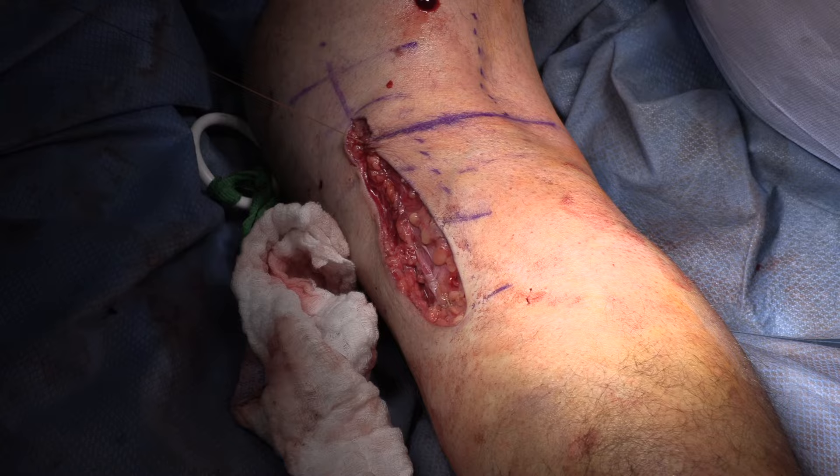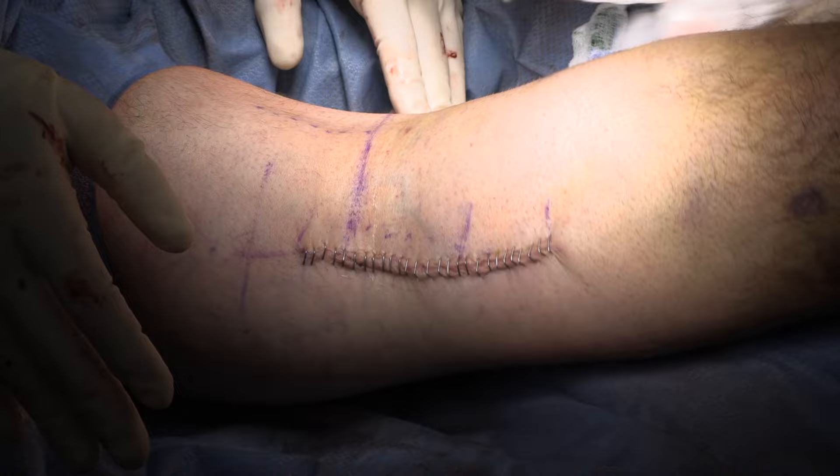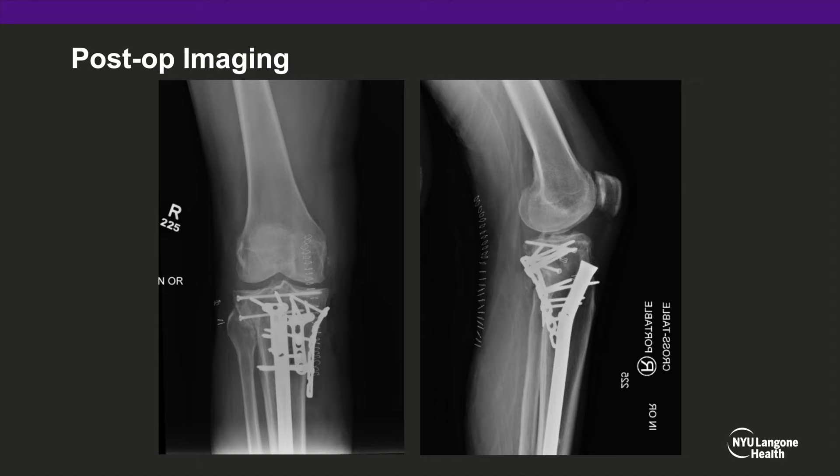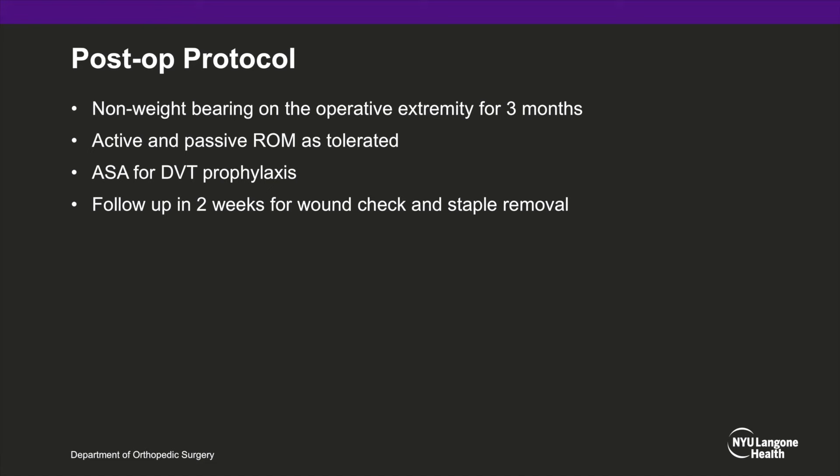The wounds were then irrigated and closed in layered fashion. The superficial layer was closed with 2-0 Vicryl and staples. Post-operative films reveal adequate reduction of the articular surface. The patient will be non-weight bearing on the operative extremity for three months; active and passive range of motion will be allowed as tolerated. Aspirin will be used for DVT prophylaxis and the patient will follow up in two weeks for a wound check and staple removal.